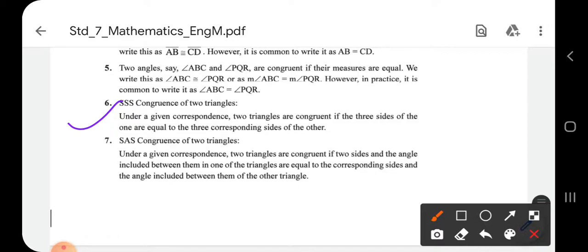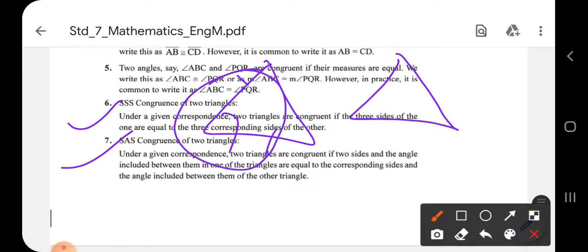SAS, side-angle-side. Two triangles are congruent if a side and one angle included between them of one triangle are equal to the corresponding side and angle included between them of the other triangle.